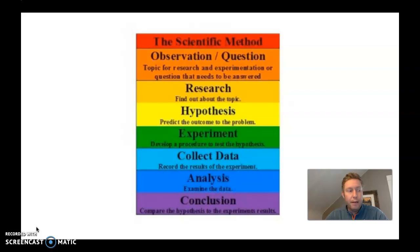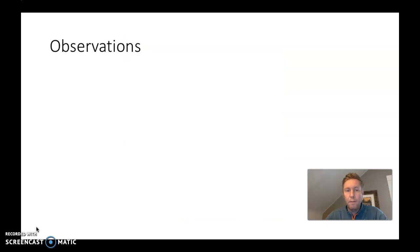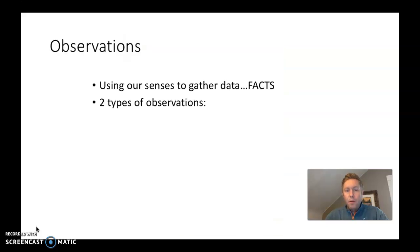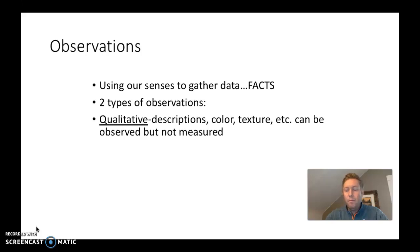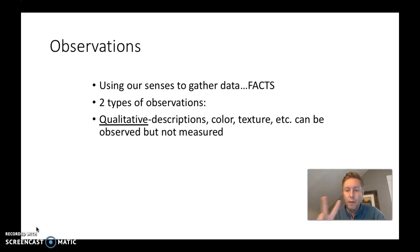Feel free to pause this video at any time to make sure you are following along. Observations are about using our senses to gather data or facts. There are two main types of observations. This information you're learning about right now, you will take with you for AP Bio next year, and into college and into your career. Because this will come up time and time again, it's very important that you understand these two major types of observation.